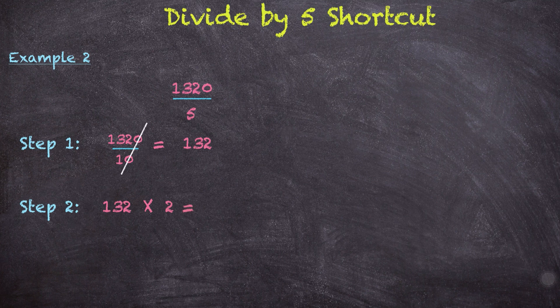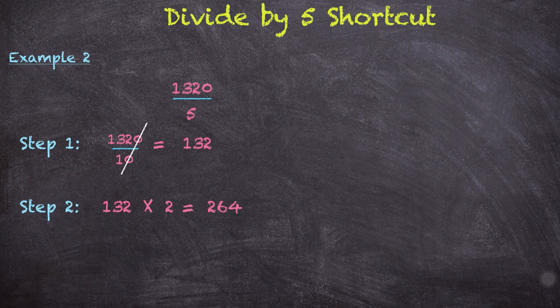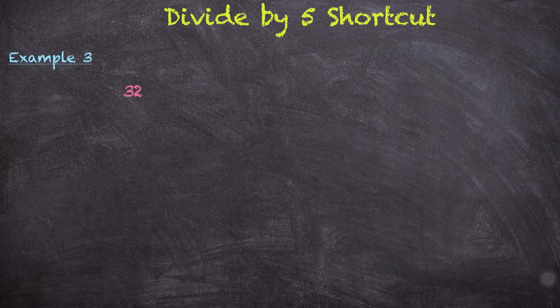Now let's do another example, and in this example we're going to take a number that isn't divisible by 5, so that we know how to work with decimals. So here we have example 3 in which the number is 32, and of course our job is to divide it by 5.